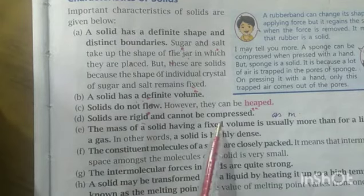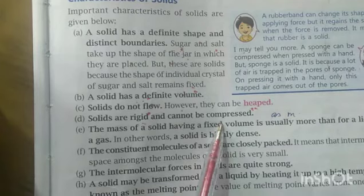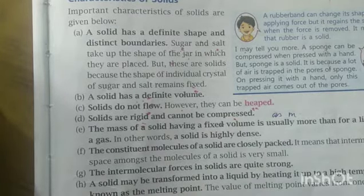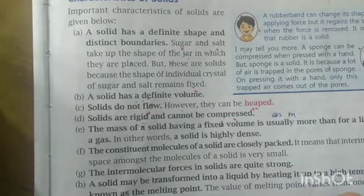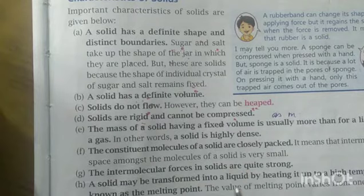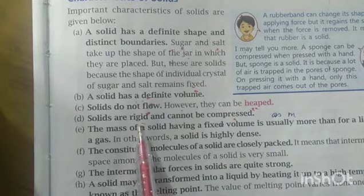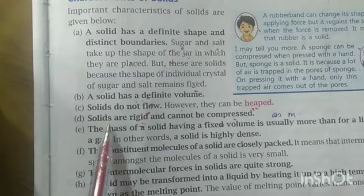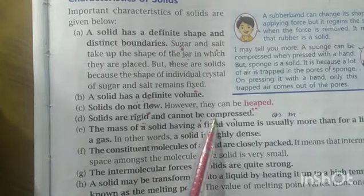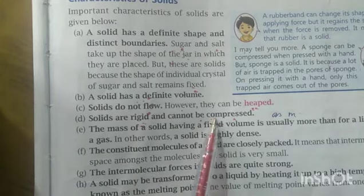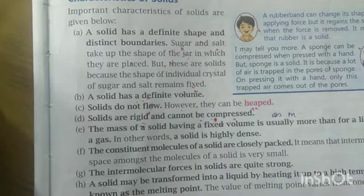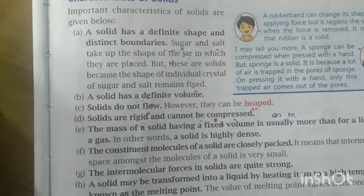Solids are rigid and cannot be compressed. Rigid means they are very strong and hard, and you cannot press them. A table or chair — can you press them? They are very rigid, very strong, and very hard. The cause for rigidity and inability to be compressed is the strong intermolecular force of attraction — solids cannot change their position and remain fixed, so they cannot be compressed or pressed easily.